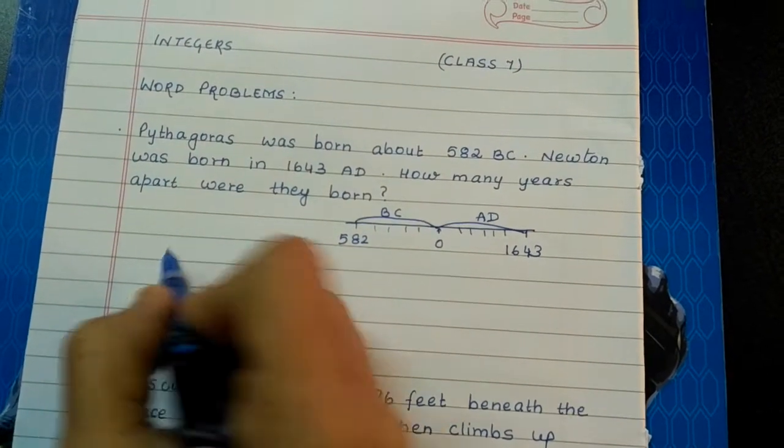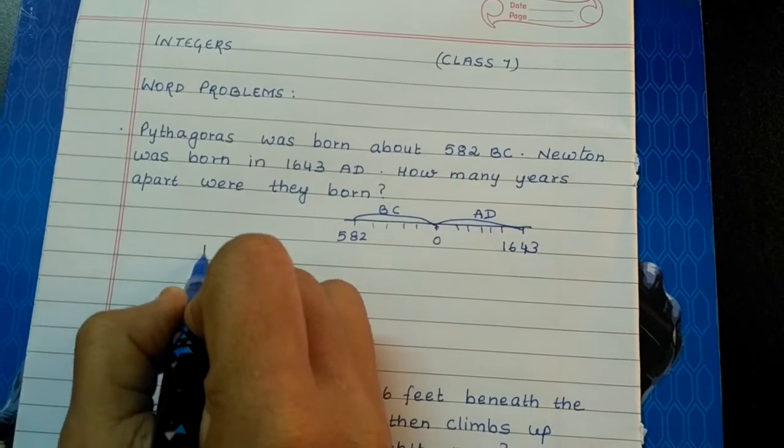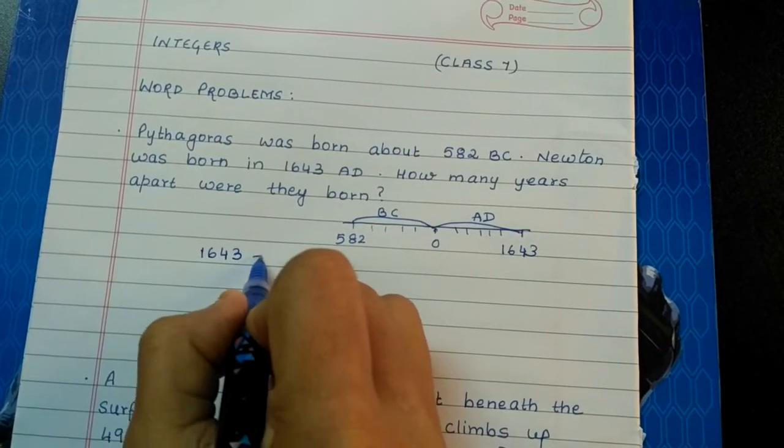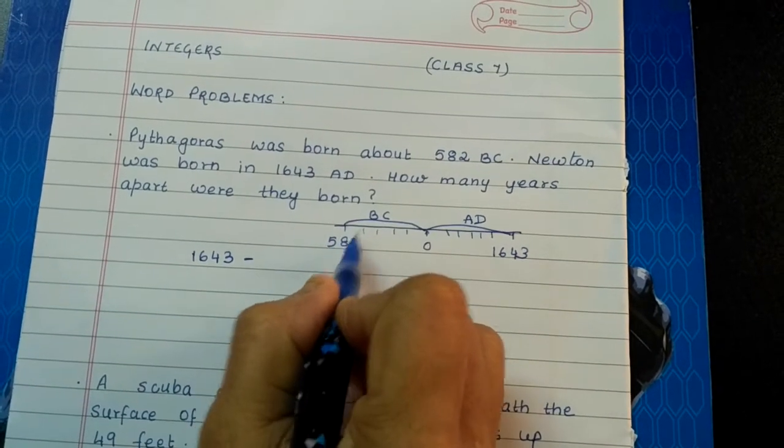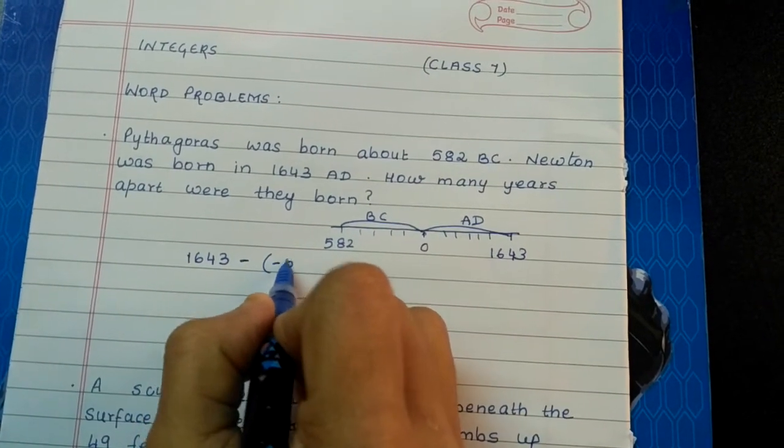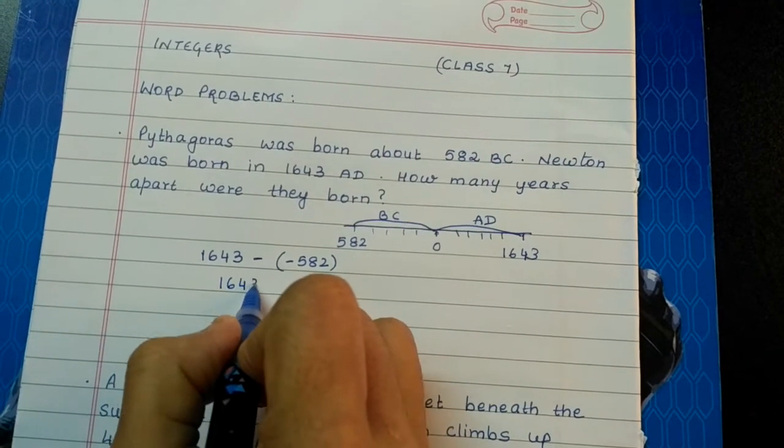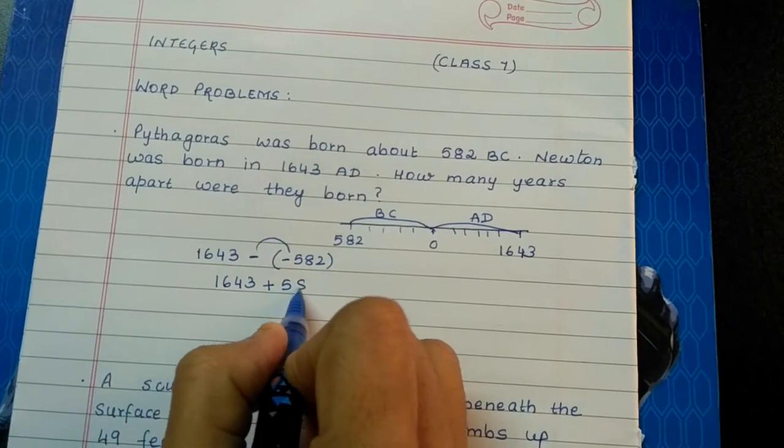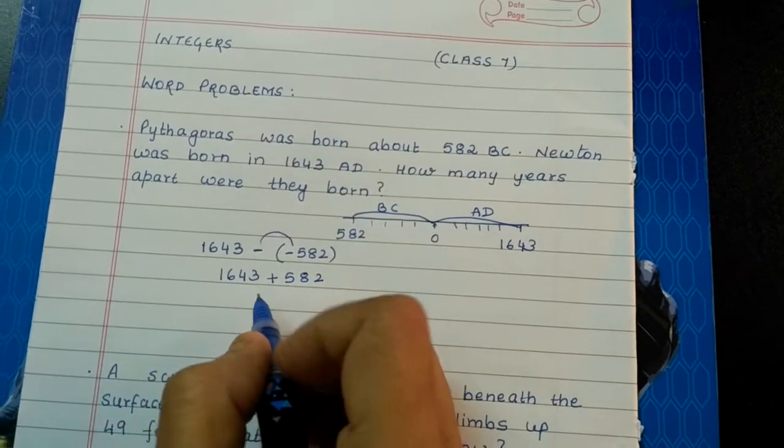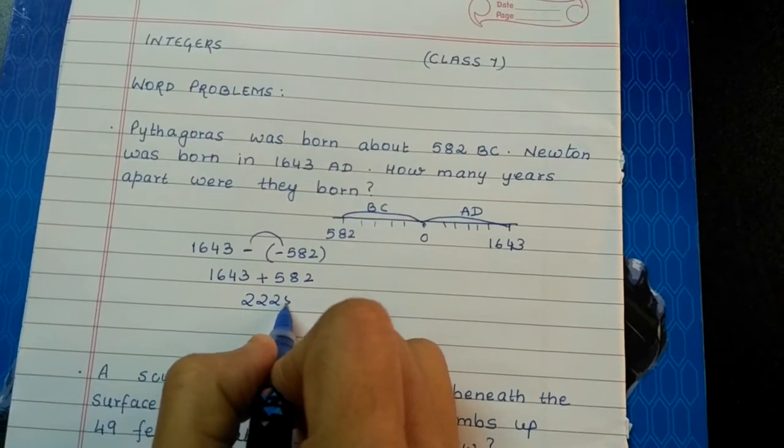We will show that difference. So 1643 minus, and because 582 is before Christ it will be negative, so minus 582. 1643 minus into minus is plus 582. When you add this, it is 2225 years.